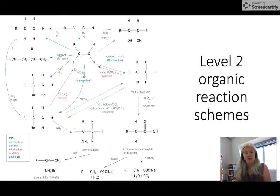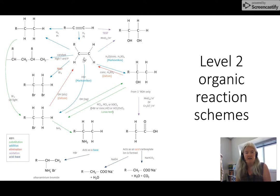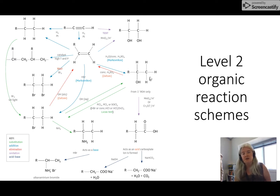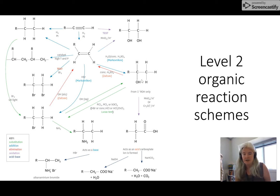Learn them by starting material. So if I'm going from an alkene, how do I change to an alcohol? How do I change an alkene to a haloalkane? How do I change an alkene to a polymer, or to an alkane? Or learn them by product — if I want to form an alcohol, what are the different ways? I can form it from an alkene or from a haloalkane.